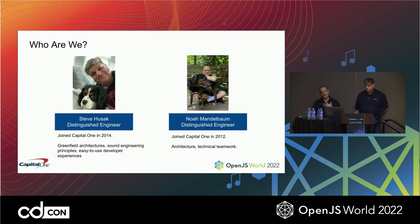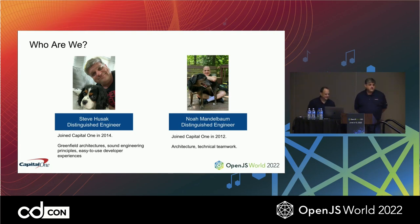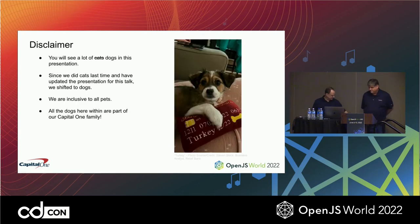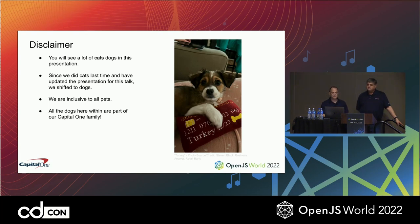So who are we? I'm Noah. I'm a distinguished engineer at Capital One. I've been there since 2012. I love architecture and technical teamwork. My name is Steve Usak. I'm also a distinguished engineer at Capital One. I've been there since 2014. I'm currently an architect in our commercial banking space. One of the things you'll notice about this presentation is that there are a lot of dogs — all taken from our Capital One Slack channel.